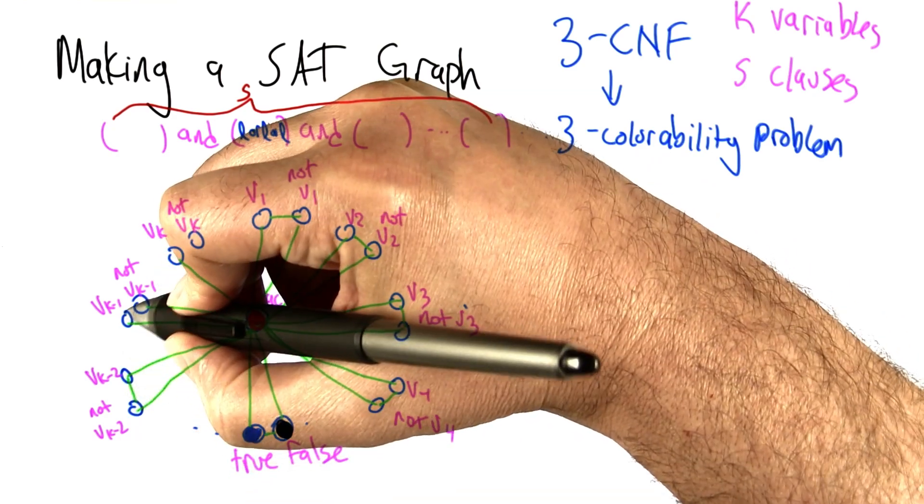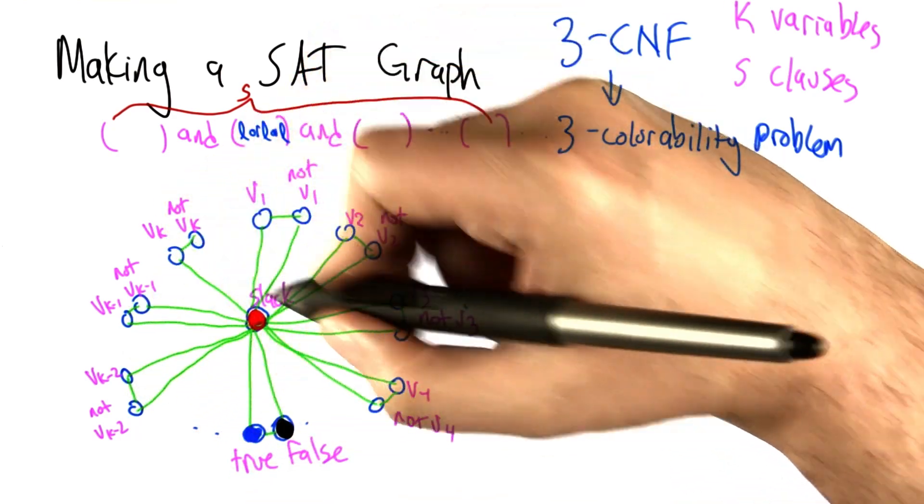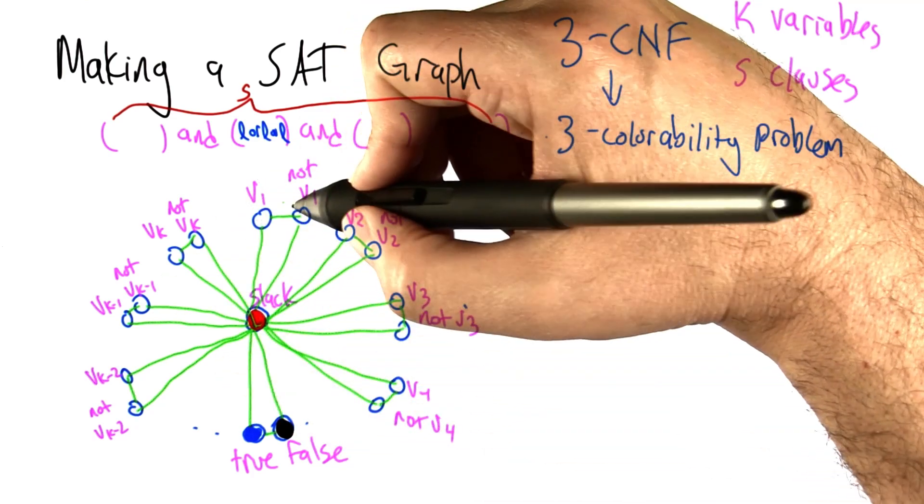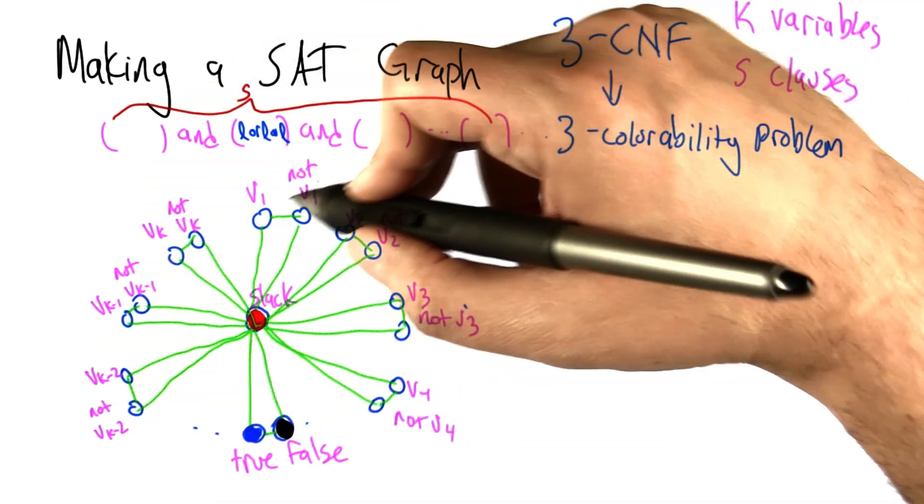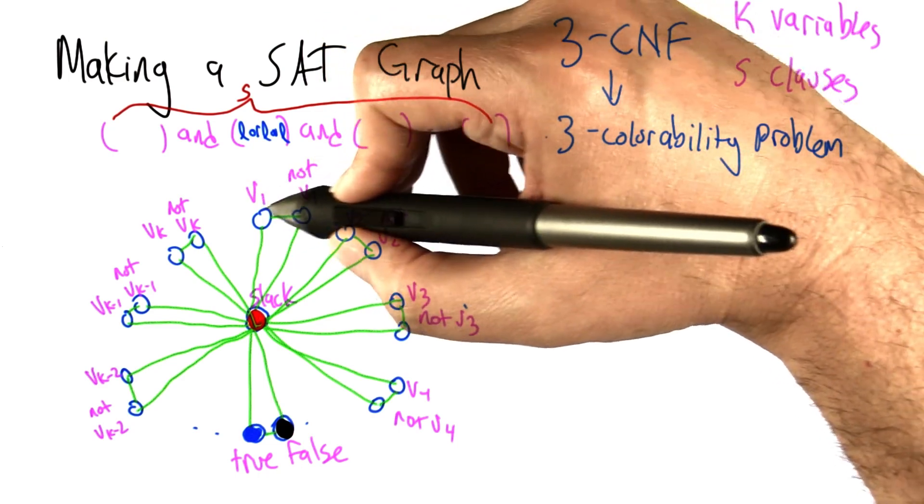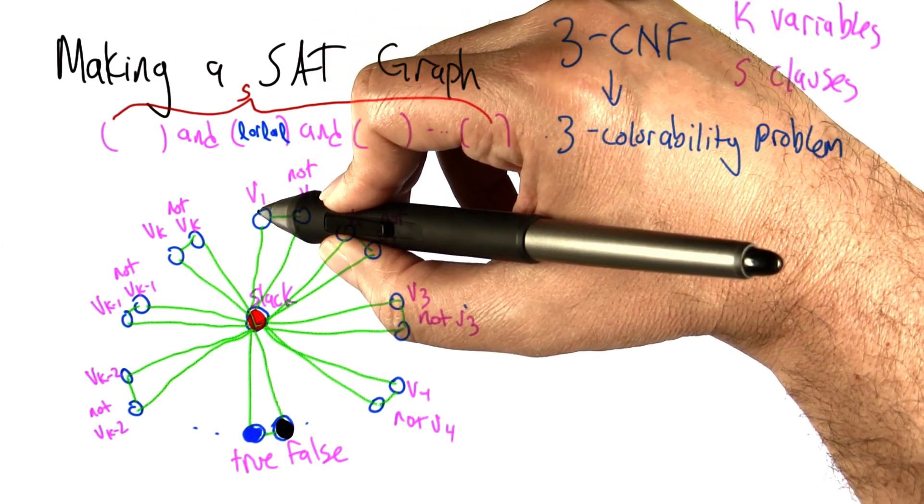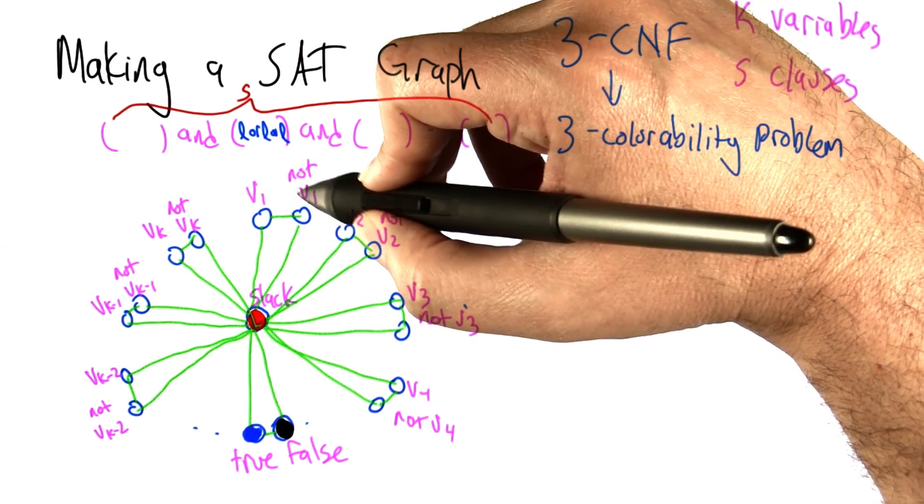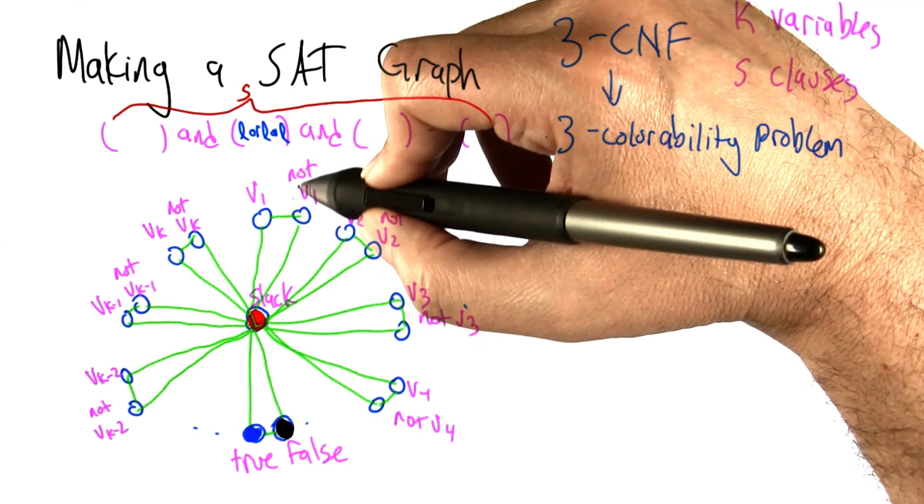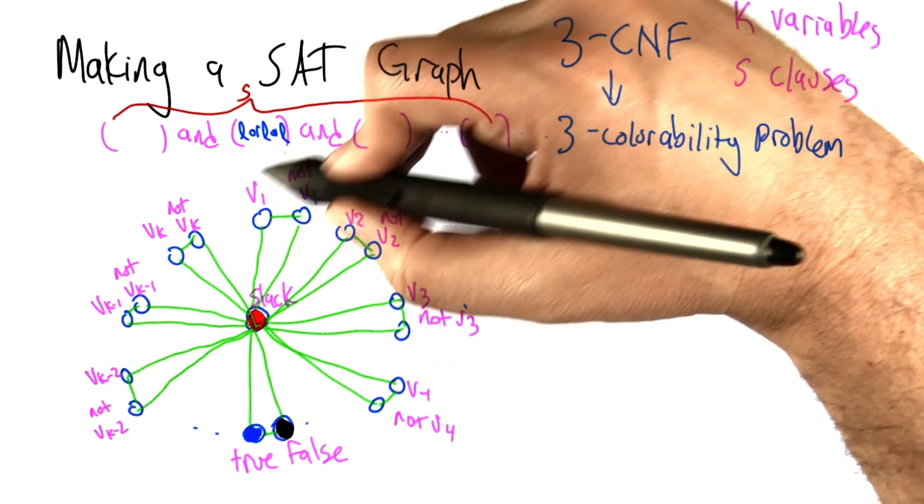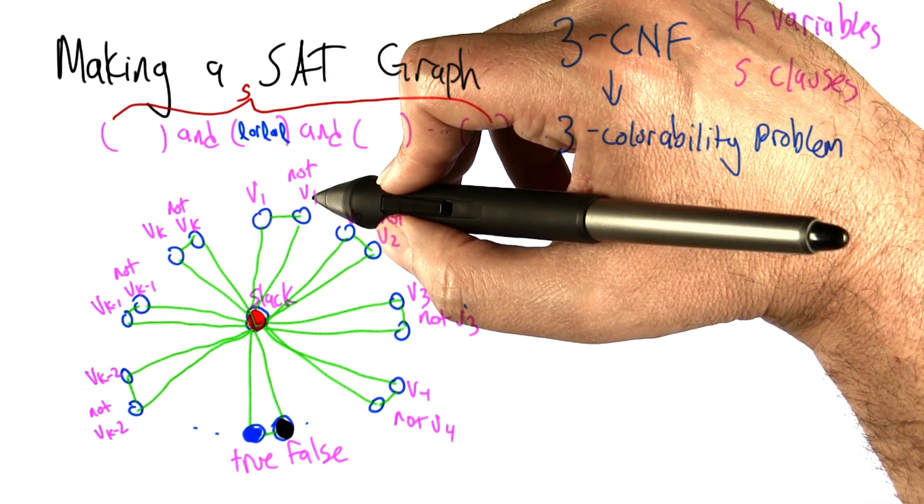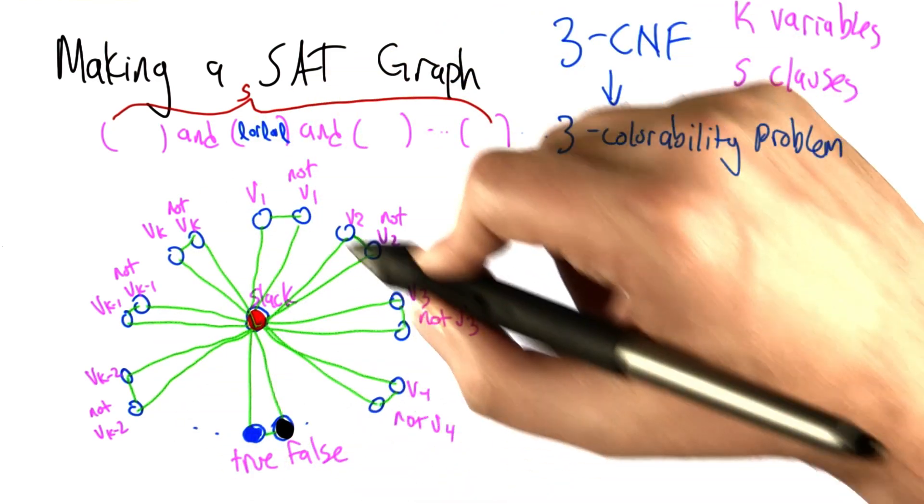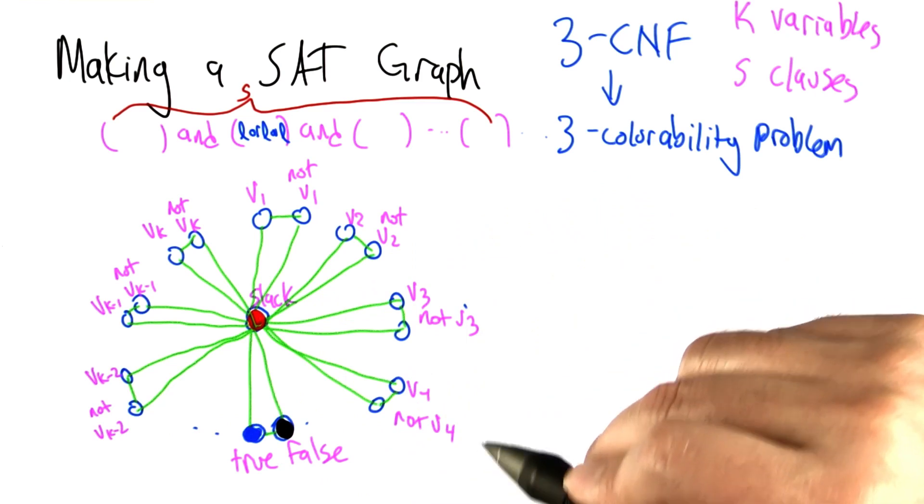So if we add one edge for each variable, connecting the pair of literals that can't both be true and both be false, now what happens is the only way that we can 3-color this is if each variable is given blue for either the variable and black for its negation or black for the variable and blue for the negation, and that's like a truth assignment. Any possible truth assignment corresponds to a 3-coloring. Any possible 3-coloring corresponds to a truth assignment.